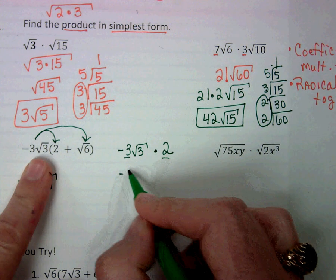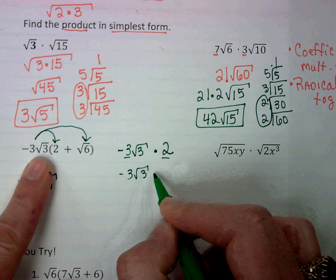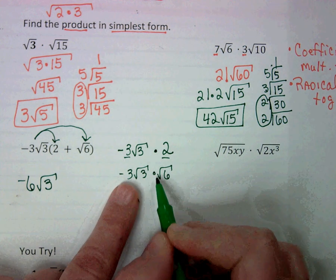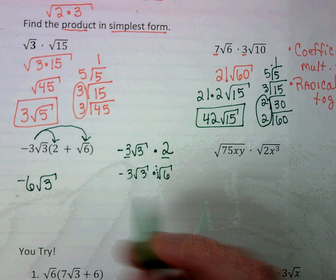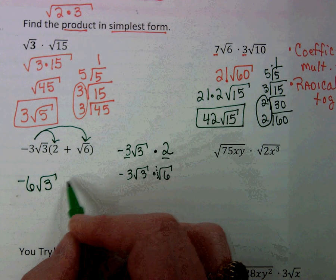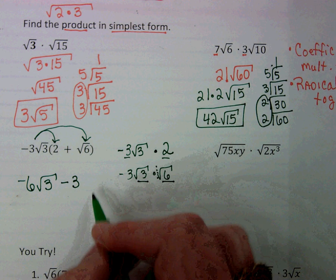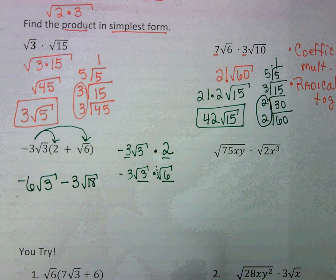For the next one, just so you can see it a little bit better. You don't have to write this step, but I just want you to see it. So -3, there's no coefficient here other than 1, so it's just going to be -3. And then we're going to multiply √3 and √6, so √18.